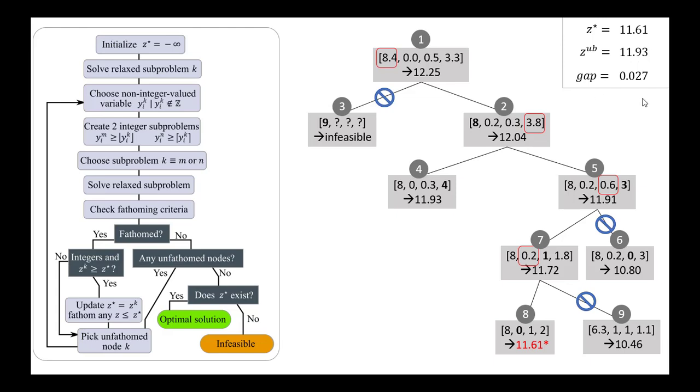So 11.61 is the first candidate. Once we do this, we also need to go back and look at any other branches, any other unfathomed branches or nodes where the solution is worse than 11.61. And if we do that, we'll see node 6 is worse, and node 9 is worse.